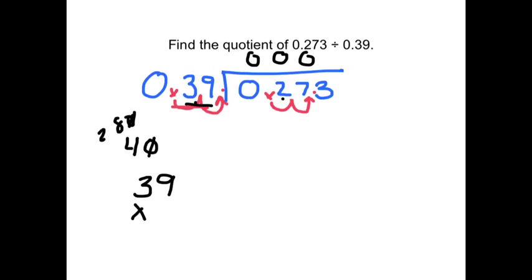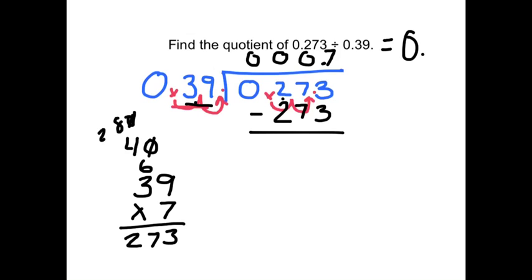39 times 7 is 3, and then a 6. 3 times 7 is 21, plus 6 is 27. So it looks like it goes 7 times. 7 times 39 is 273. There's nothing left over, and the decimal comes straight up. So the quotient is 7 tenths.